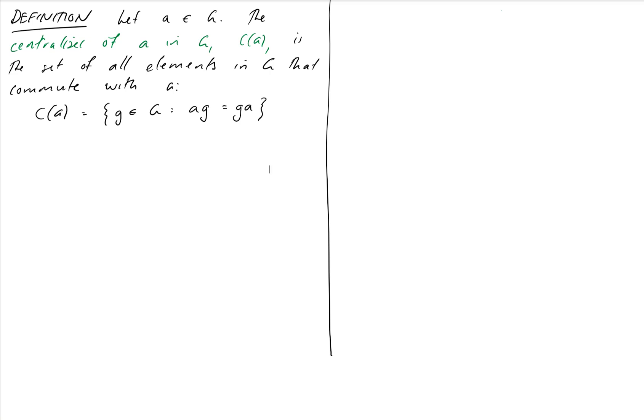For any element we can build the centralizer. Just like with the center, we've claimed that it's a subgroup so we'll write that down as a theorem. Again it's 3.6 in Galleon. C(A) is a subgroup. So we actually need to confirm this before we can go and make use of any subgroup information about it.